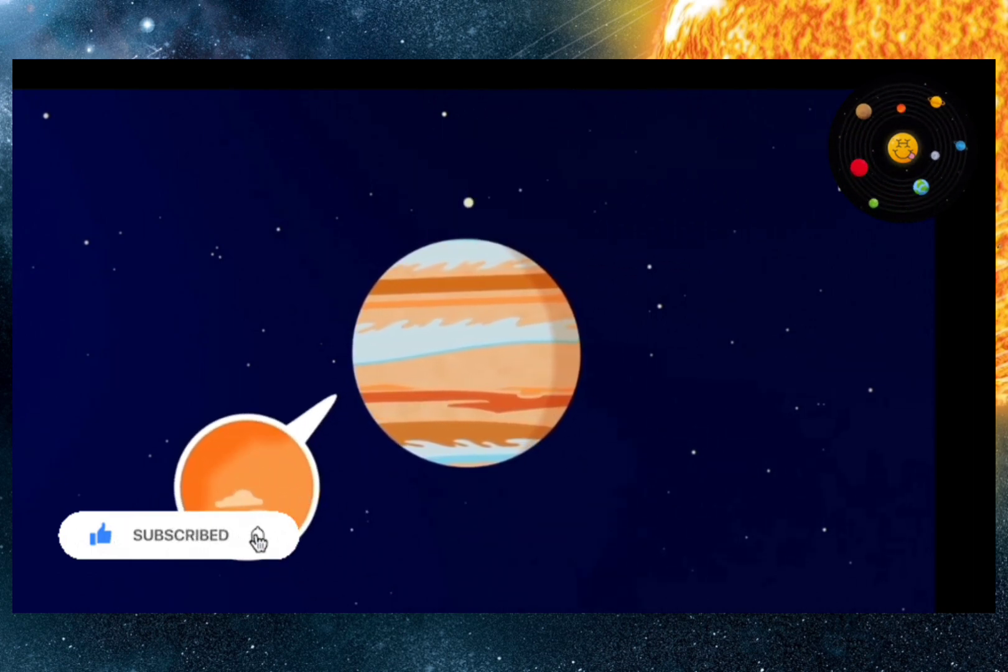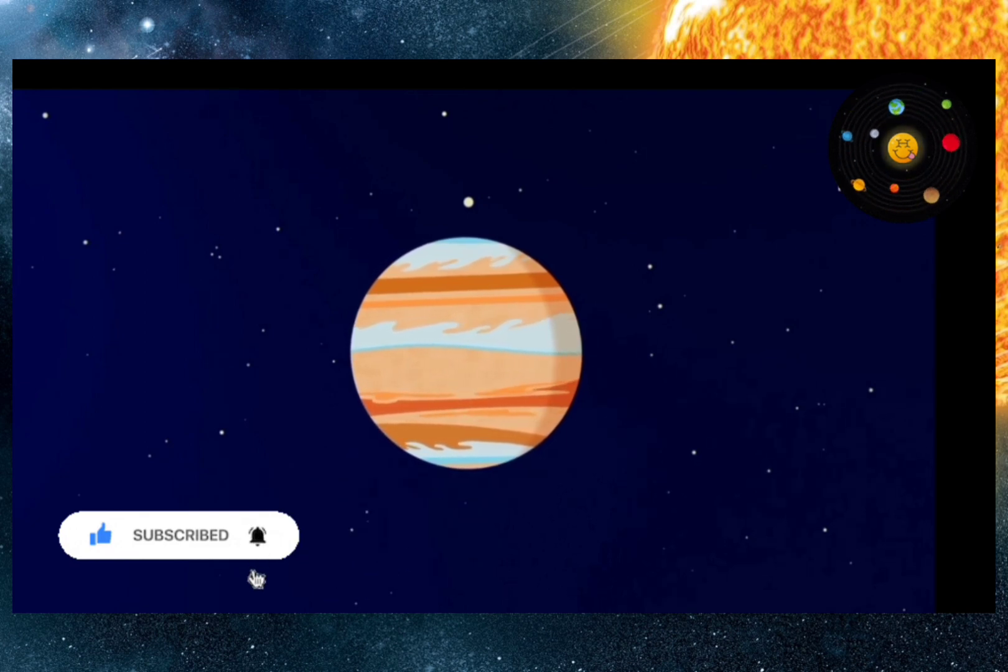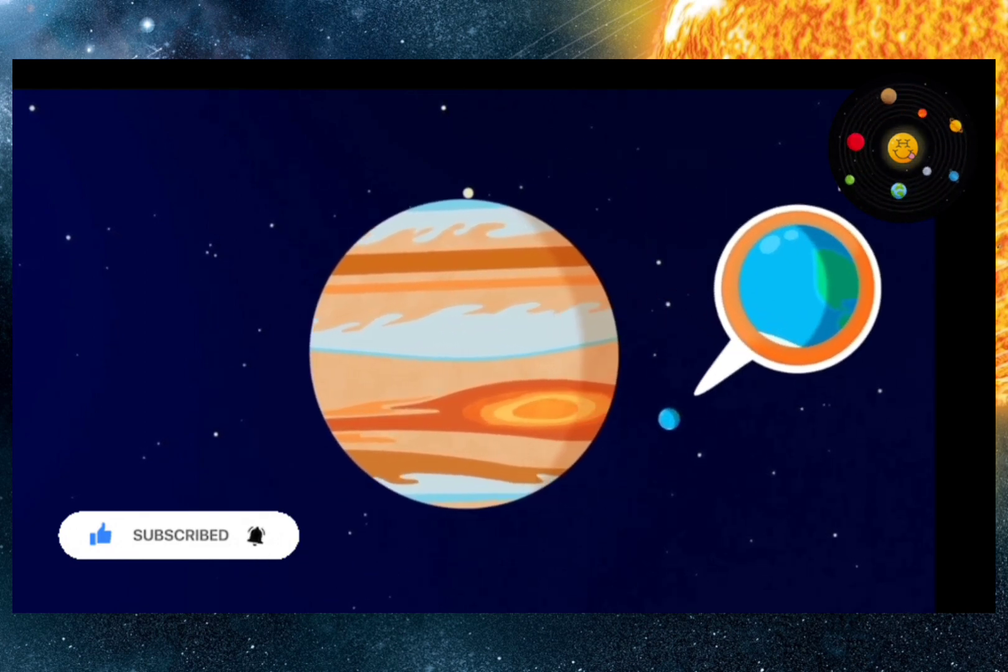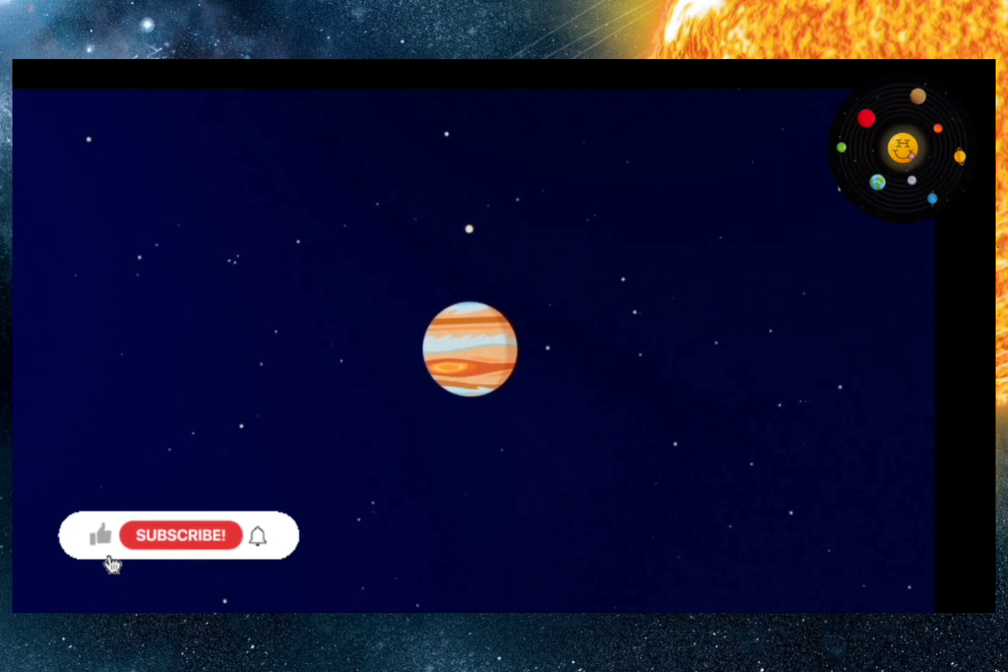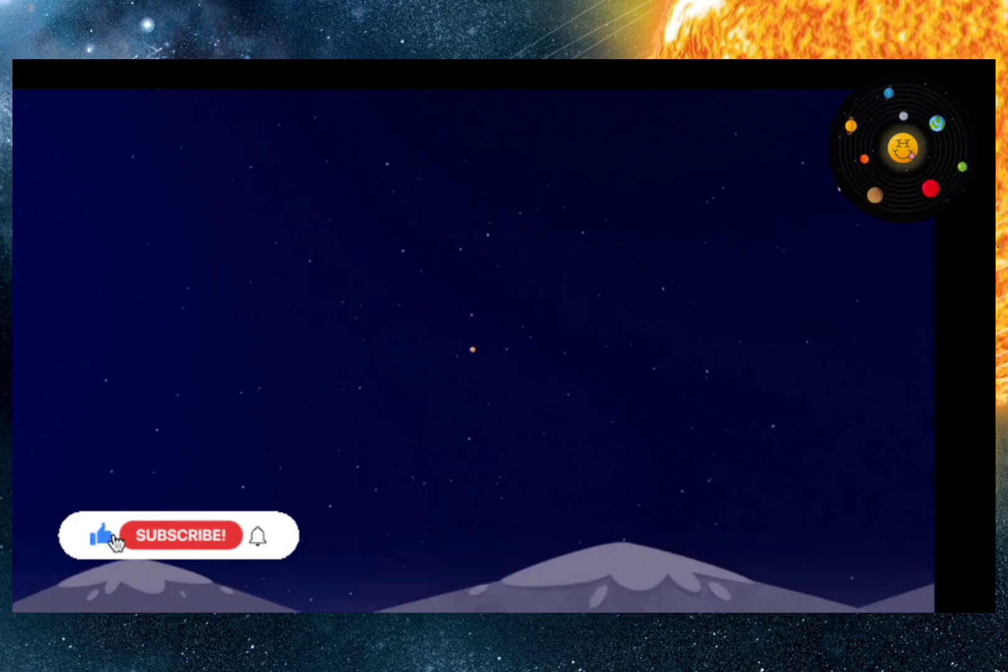One of these hurricanes is the big red spot. It is bigger than the Earth and has lasted for hundreds of years. That's Jupiter, bright and blustering.